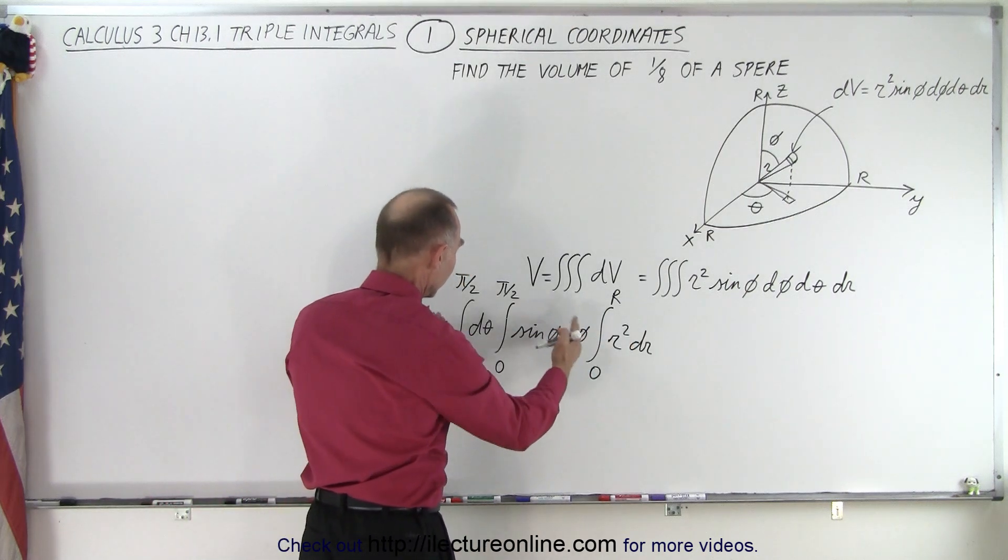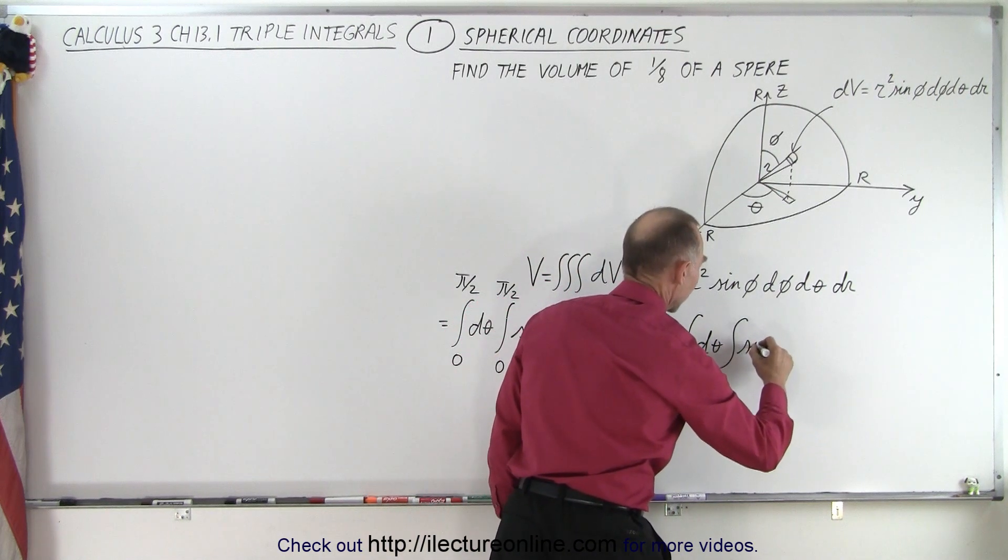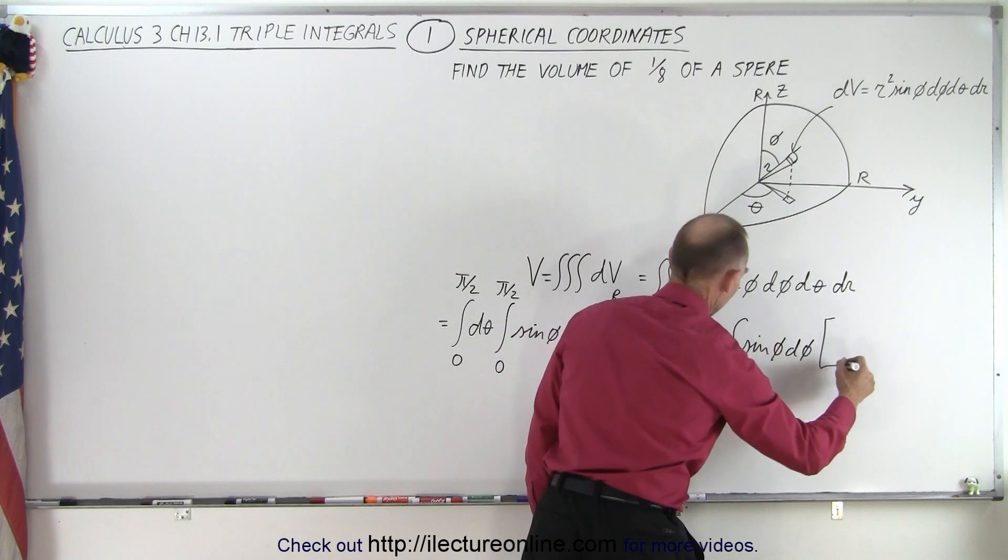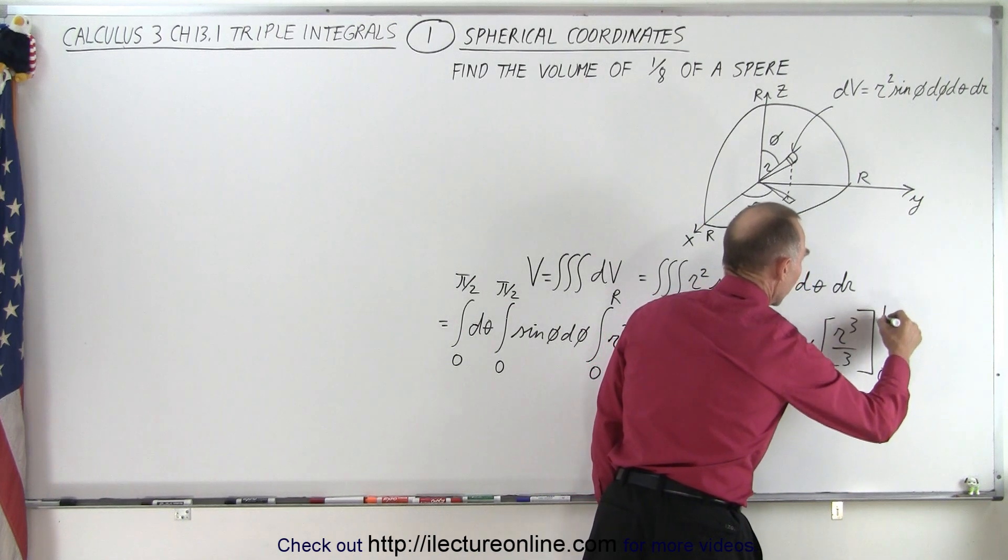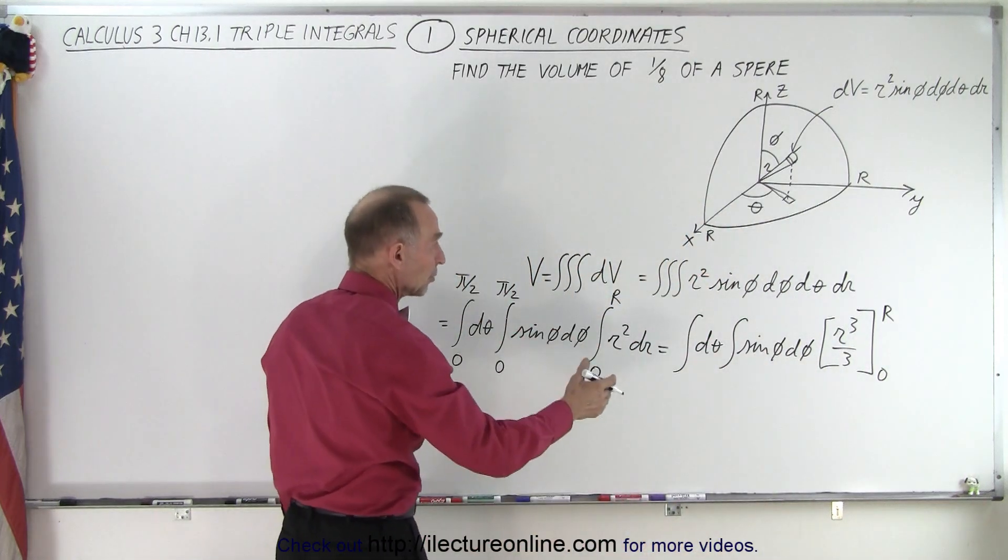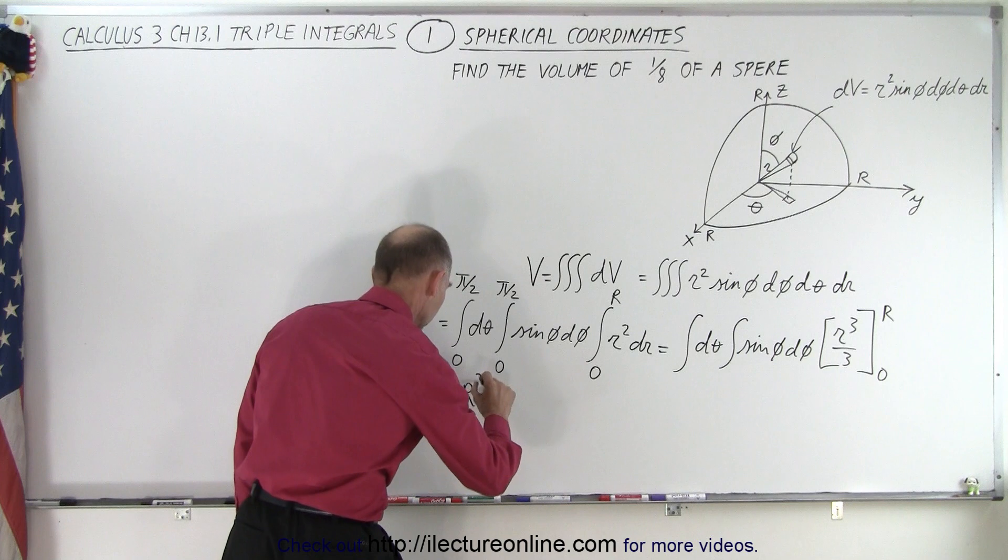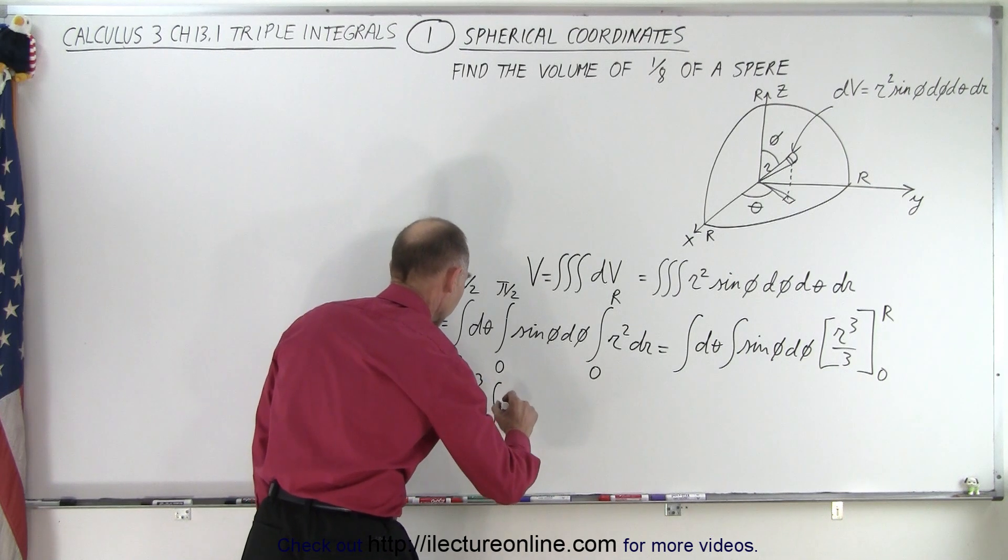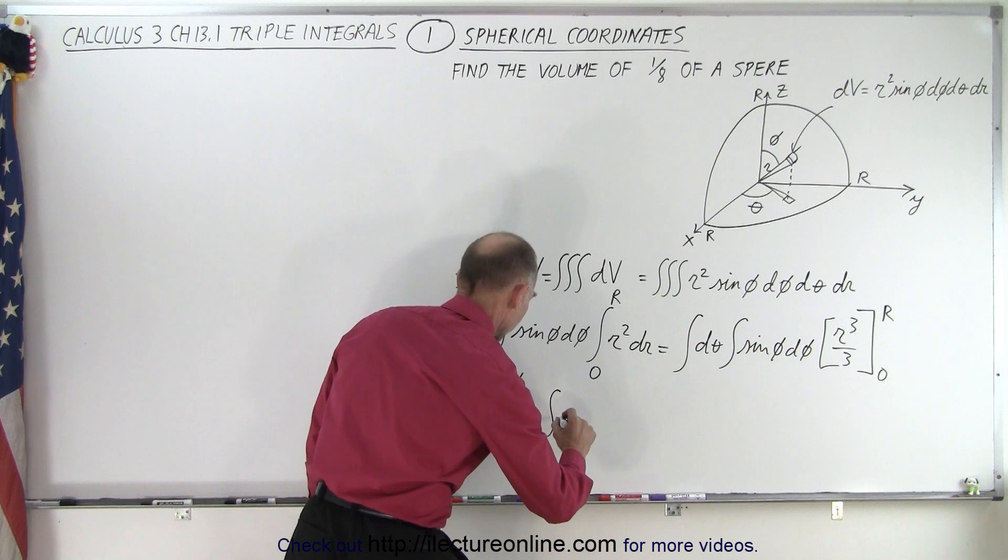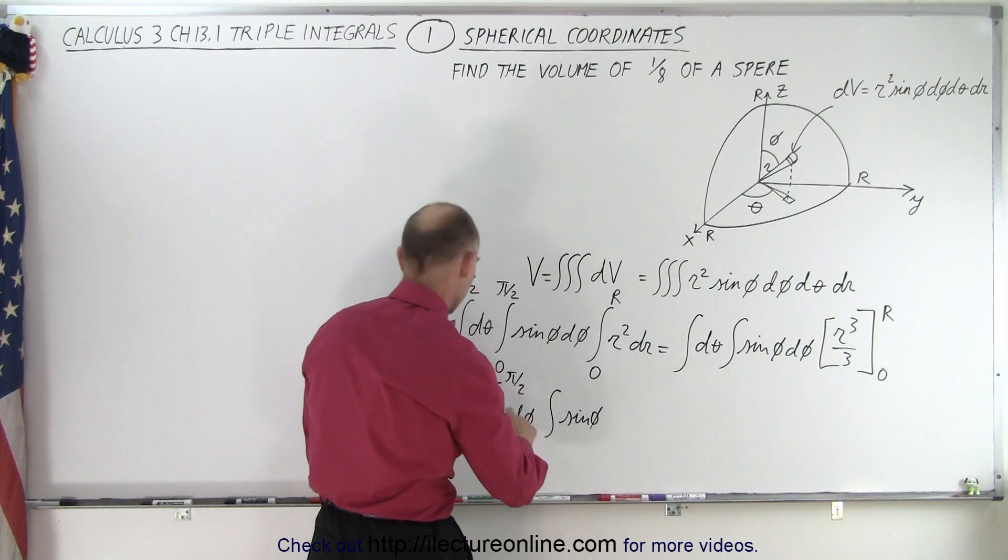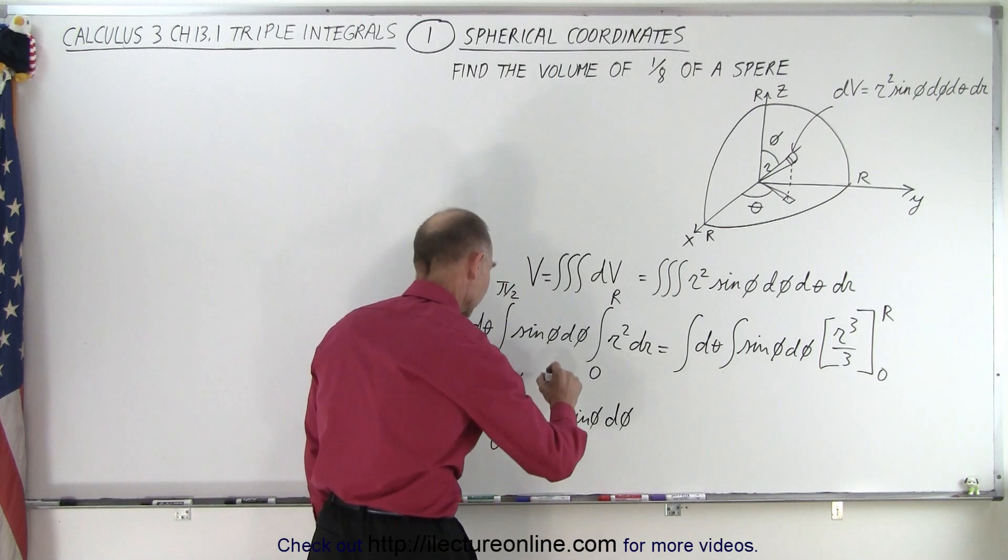So the first thing we're going to do is integrate this. This stays the same, so this becomes the integral of d theta times the integral of the sine of phi d phi times, if we integrate r squared, we get r cubed over 3, and we go from 0 to r. Of course, when we plug in the lower limit, we get r cubed over 3. So this becomes r cubed over 3 times the integral from 0 to pi over 2 of d theta, and then the integral from the sine of phi, oh wait a minute, that's d theta, don't want to get the wrong angle in there, d theta, the sine of phi d phi.